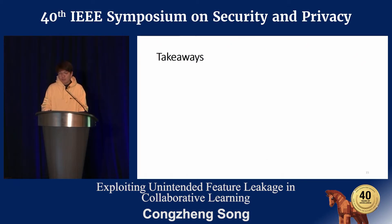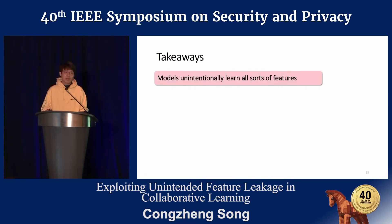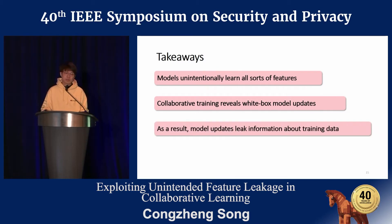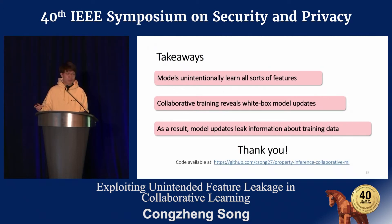Here are the takeaways. We have shown that models can unintentionally learn all kinds of features — features helpful for inferring properties uncorrelated with the learning task. Collaborative training reveals white-box model updates to participants and the server, so whoever can access the model updates can learn information about participants' training data. Our code is available on GitHub.